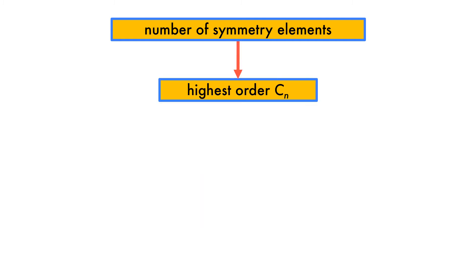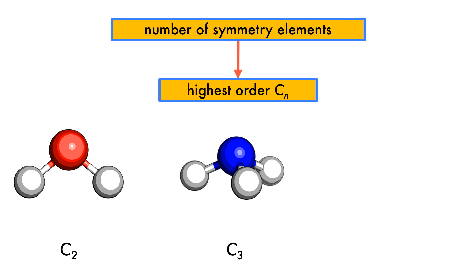If the molecule doesn't belong to any of these point groups, then we need to consider the order of the principal rotational axis. Some examples are water, which has a C2 principal rotational axis; ammonia, which has a C3 principal rotational axis; and sulfur hexafluoride, which has a C4 principal rotational axis.